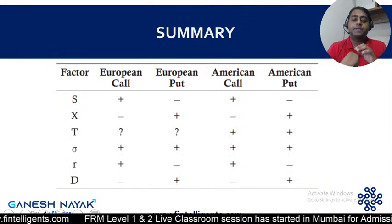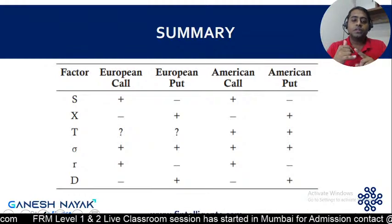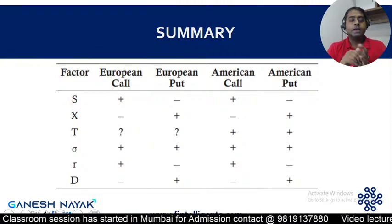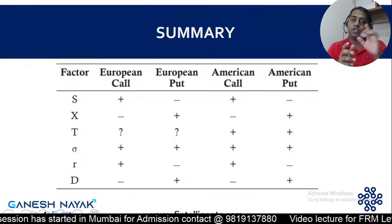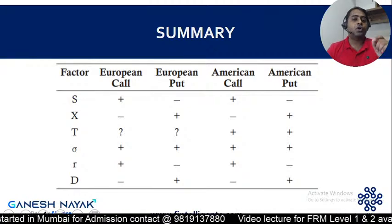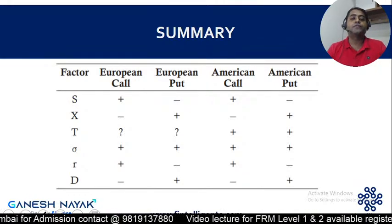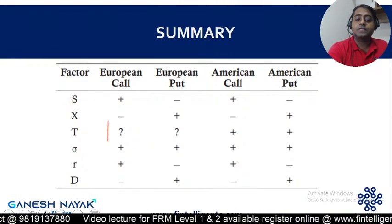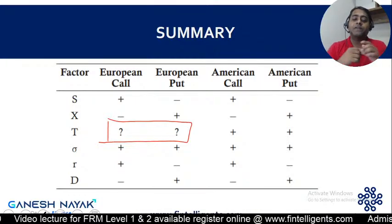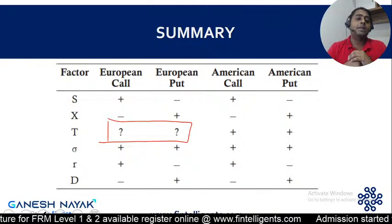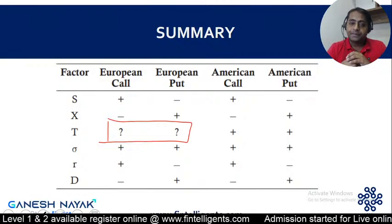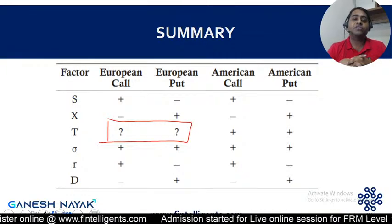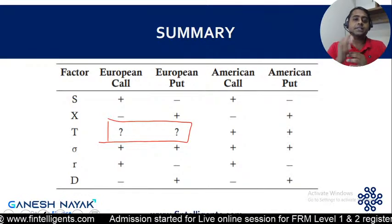Summary of all six factors: Stock price has a direct relationship with the call option price and an inverse relationship with the put option price. Strike price has an inverse relationship with the call option price and a direct relationship with the put option price. Risk-free rate is direct for call and inverse for put. Volatility is direct for both call and put. Dividend is inverse for call and direct for put. For maturity, there is generally a direct relationship for both, but a question mark applies for European options due to potential dividend impact.